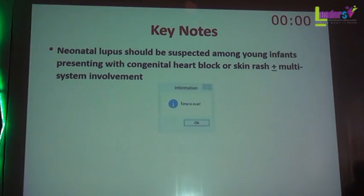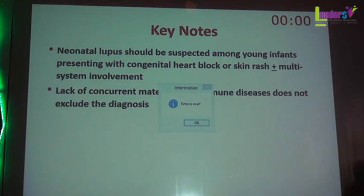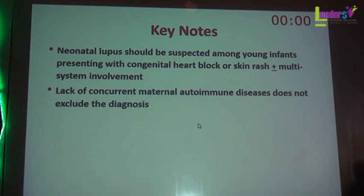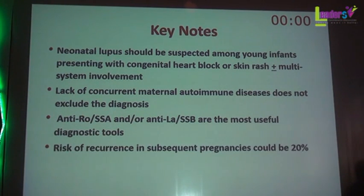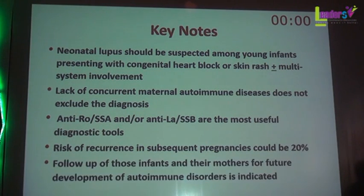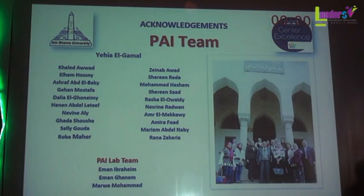My keynotes: neonatal lupus should be suspected in young infants presenting with congenital heart block or skin rash. Lack of concurrent maternal autoimmune disease does not exclude the diagnosis. The most important diagnostic tools are anti-Ro and anti-La antibodies. The risk of recurrence in subsequent pregnancies is 20%. Follow-up of infants and mothers to exclude development of autoimmune disorders is indicated.